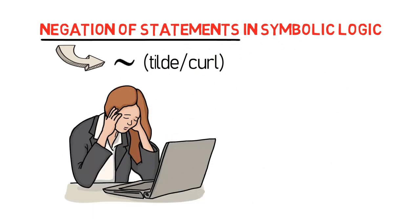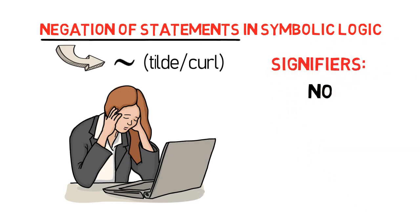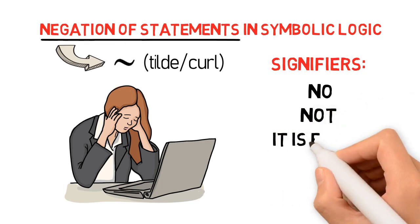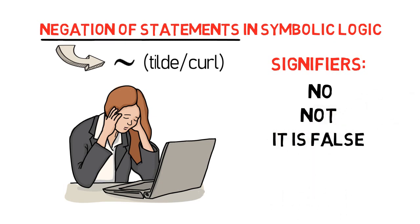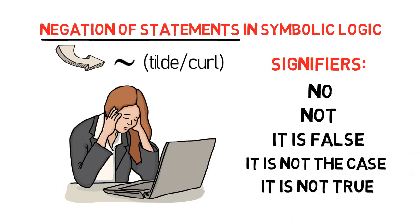But how do we know that a statement is negative? A statement is negative if it contains at least one of the following signifiers: no, not, it is false, it is not the case, or it is not true.